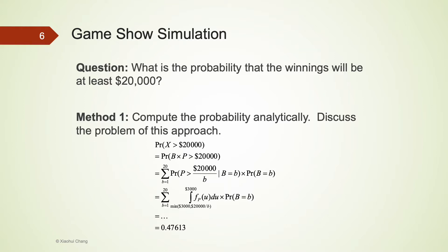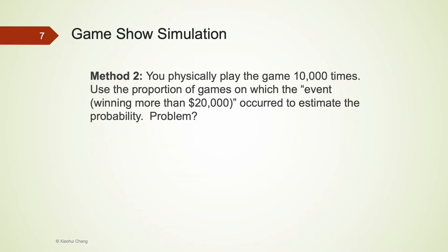A second method is to play this game a very large number of times, say 10,000 times. Out of these 10,000 times, how many of the games where the event actually happens, that means how many times the winning is indeed more than $20,000? The proportion can be used to estimate this probability. The problem with this approach is that it's extremely time consuming and also very boring to do.